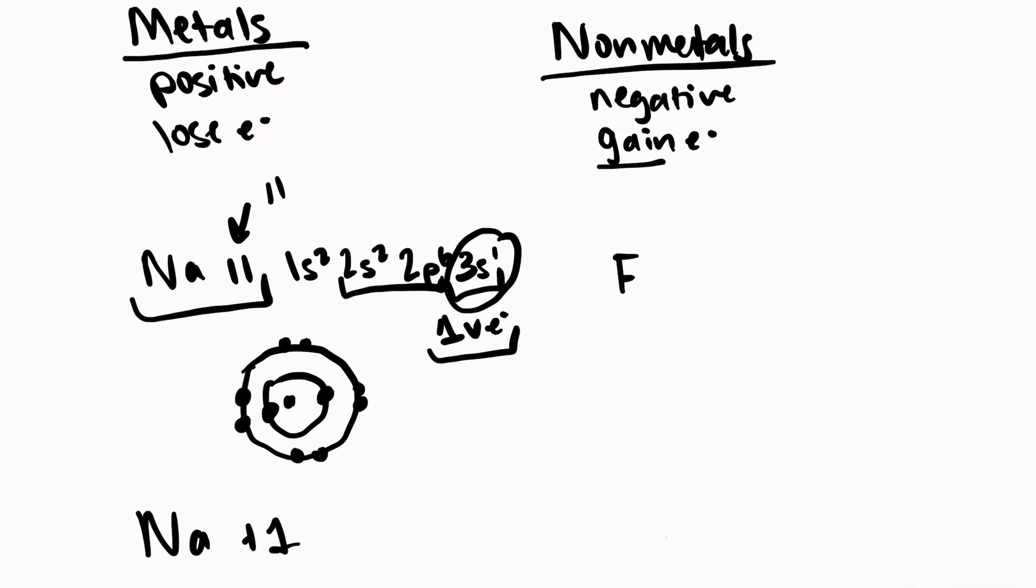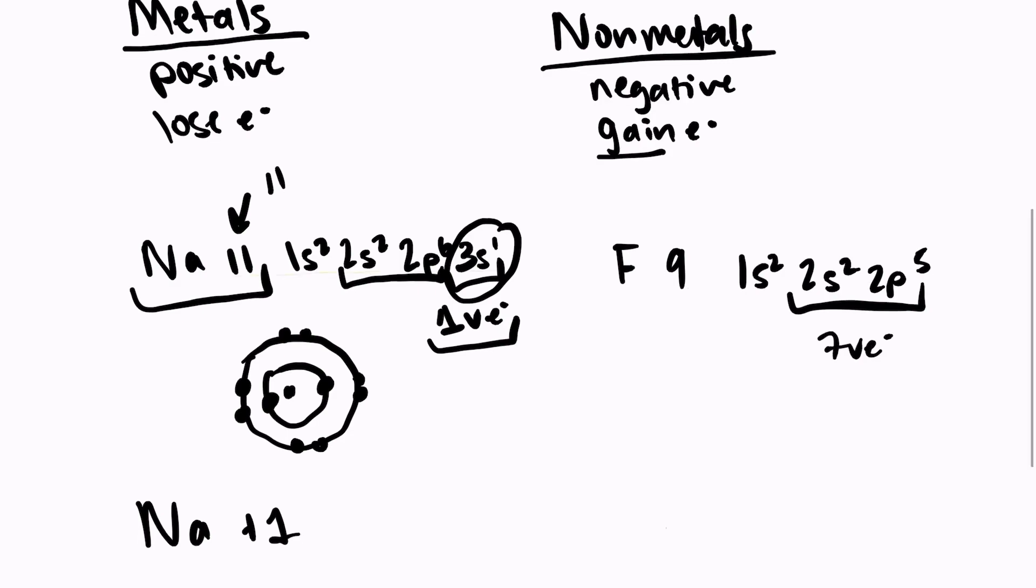And then let's take a look at fluorine. Fluorine has an atomic number of 9. So its electron configuration would be 1s2, 2s2, 2p5. So fluorine has 7 valence electrons. To follow the octet rule, it needs to gain 1 more valence electron.